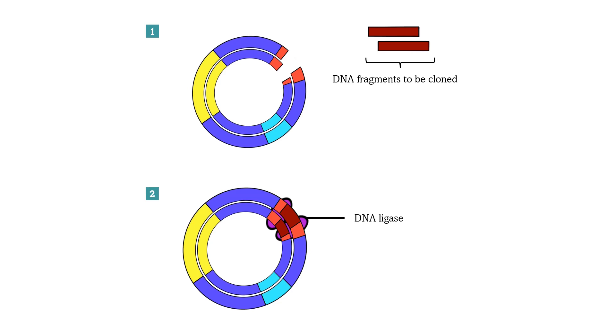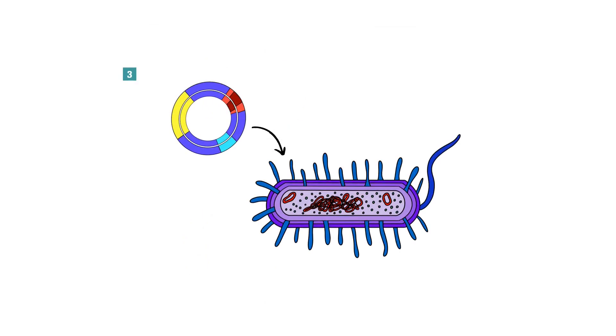The sticky ends of the DNA fragments anneal, and DNA ligase creates phosphodiester bonds. Those are the bonds between a phosphate group and a deoxyribose to seal the nicks in the DNA backbone. The bacterial plasmid is then introduced into a bacterial host cell by transformation.